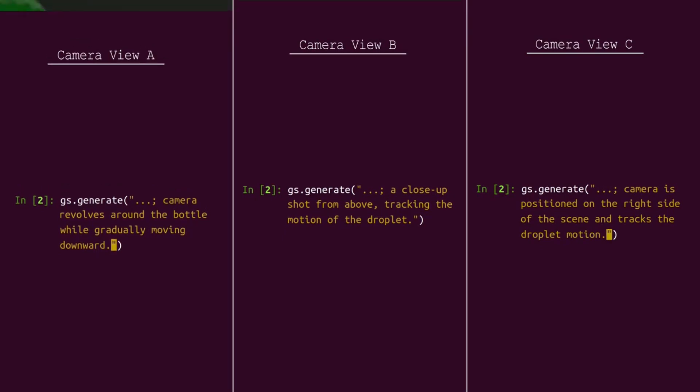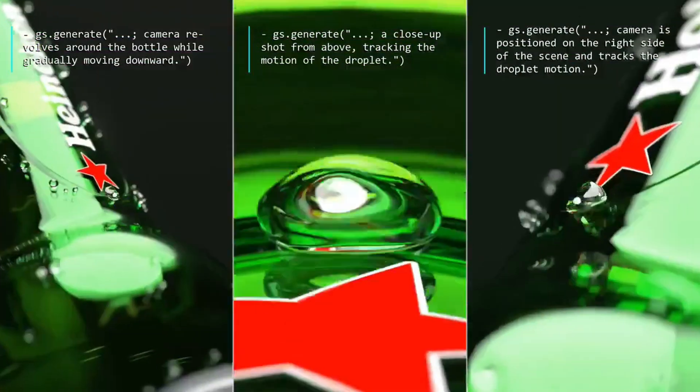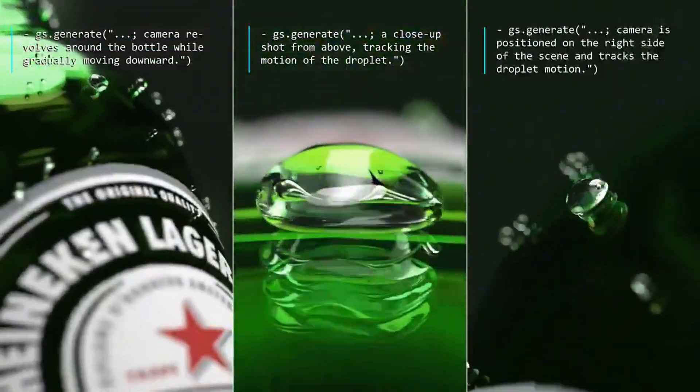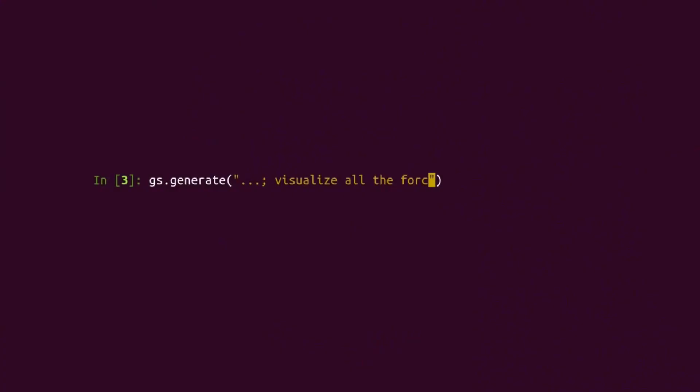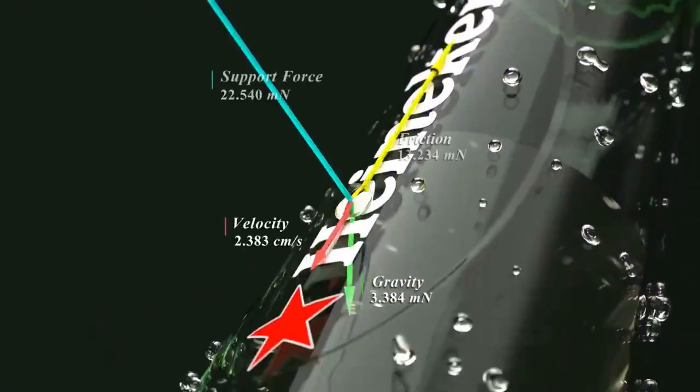What's more, Genesis simplifies data collection and generation, spinning the data flywheel automatically. This means researchers can focus on innovation rather than repetitive tasks.